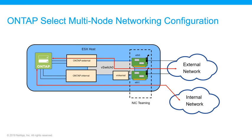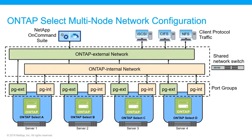Four, six, and eight-node ONTAP SELECT clusters have similar network configurations. Each ONTAP SELECT instance resides on a separate physical server. Internal and external traffic is isolated using separate network port groups. The port groups are assigned to each virtual network interface and allow cluster nodes to share the same physical switch infrastructure. The ONTAP internal network is dedicated to ONTAP SELECT traffic.